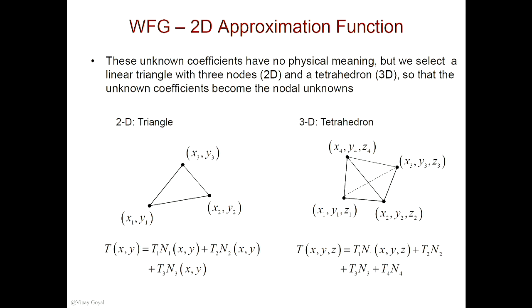These shape functions now will become these basis functions. And by doing so, now I'm able to represent the behavior of temperature in that element. For 3D, now you have four nodes, so you have four temperatures that are unknown, and the basis functions are the ones that you'll have to find to plug into your weak form.